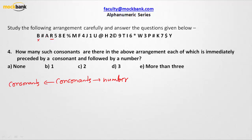R is preceded by A and followed by five, but R is not a consonant — it is a vowel, so R is not the case. E cannot be an option because we are looking for consonants only. M is preceded by a percentage mark, which is not a consonant. How about F? F is preceded by M, which is a consonant, and is immediately followed by four, which is a number — so F satisfies the pattern we are looking for.